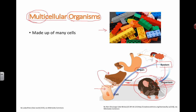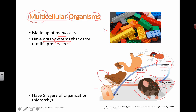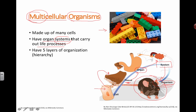Here are a few bullet points: multicellular organisms are made up of many cells, and they have organ systems that carry out life processes. I have my digestive system to help me eat, my circulatory system to help move things around my body with blood, and my respiratory system that helps me breathe. We're going to talk about five layers of organization.